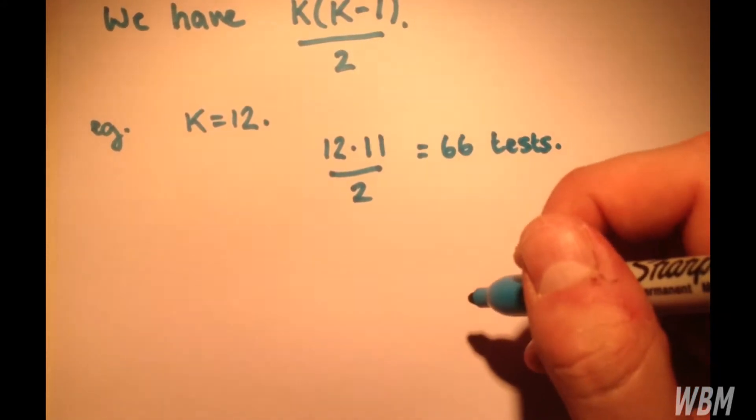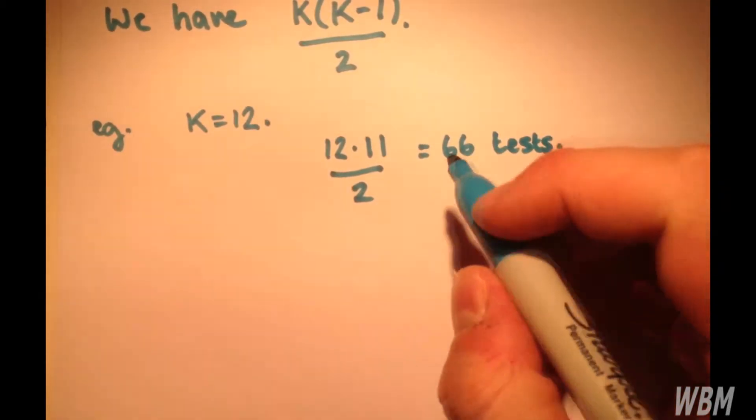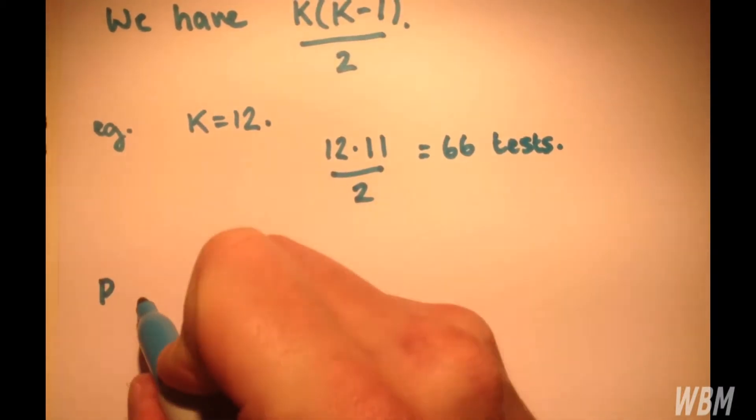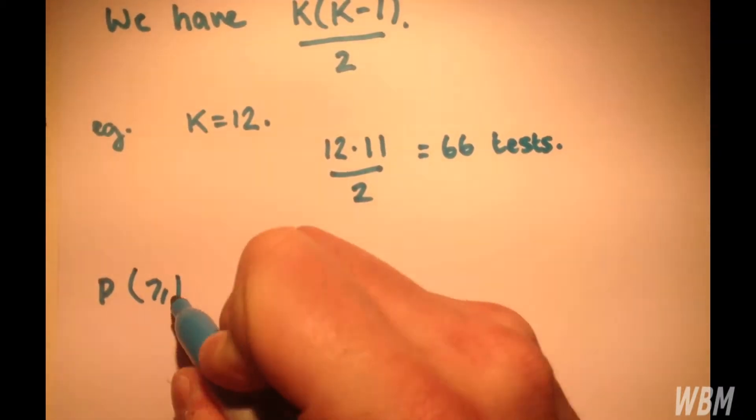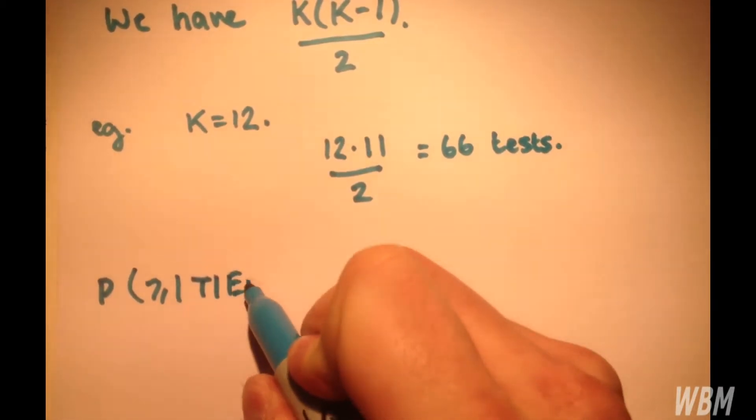So, how does this affect the probability of getting at least one type 1 error? So, the probability of at least one type 1 error?